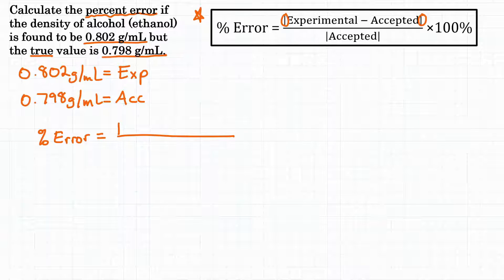We have the experimental value, so that's this 0.802 grams per milliliter minus the accepted which is the 0.798 grams per milliliter. And then remember your absolute value bars there because we need to take the positive.